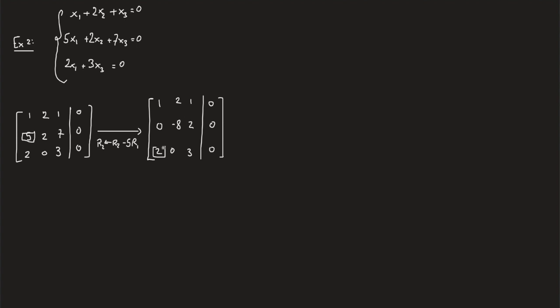Now we try to null this guy out by replacing r3 with r3 minus 2r1. The first and second rows remain the same. We get: 2 minus 2 times 1 is 0, 0 minus 2 times 2 is -4, 3 minus 2 times 1 is 1, and 0 minus 2 times 0 remains 0.